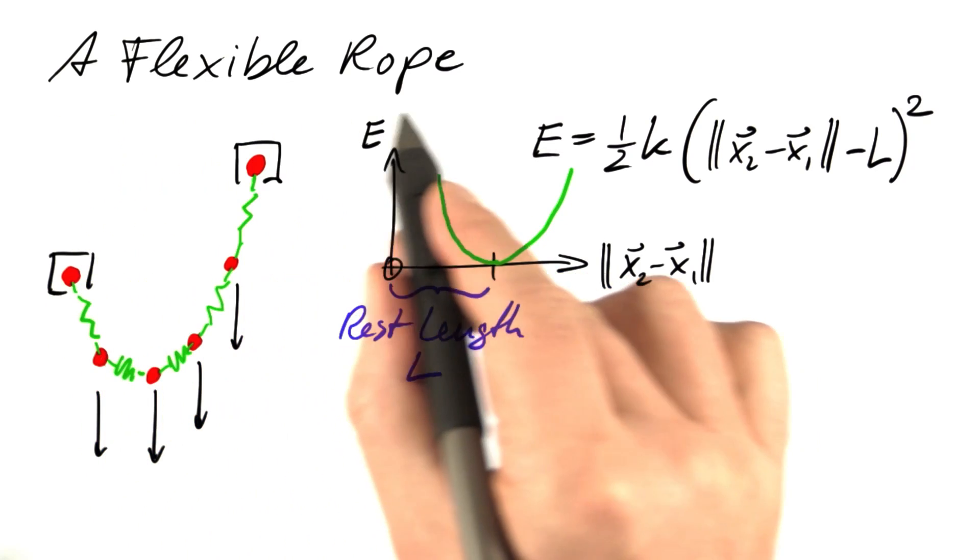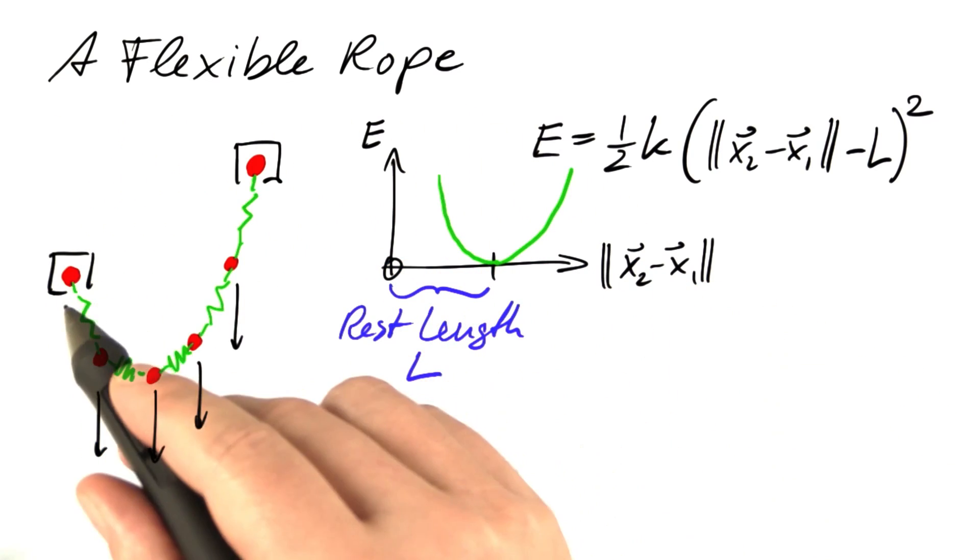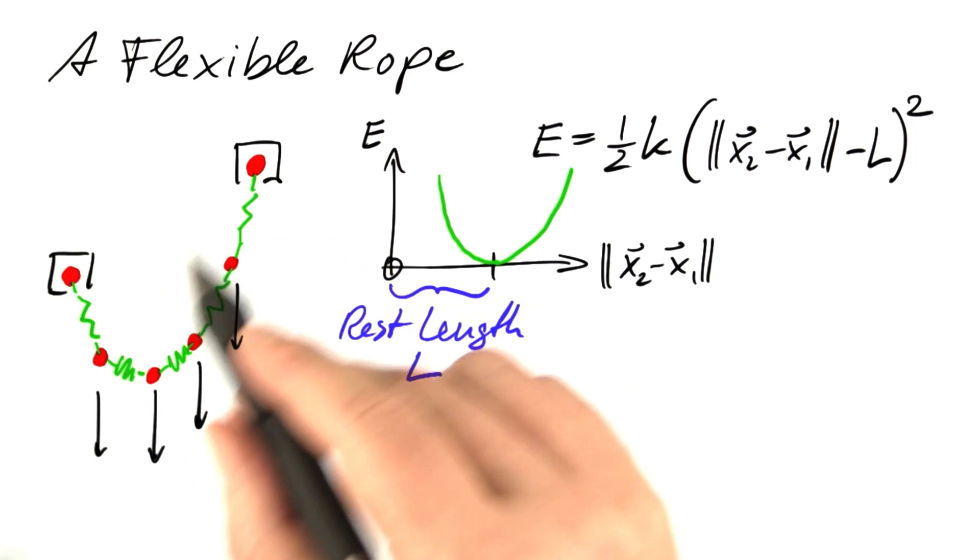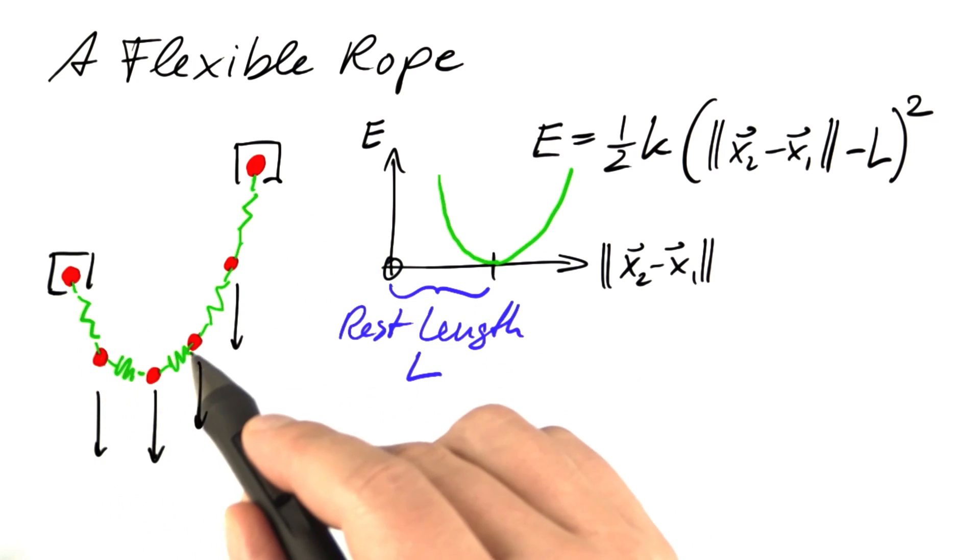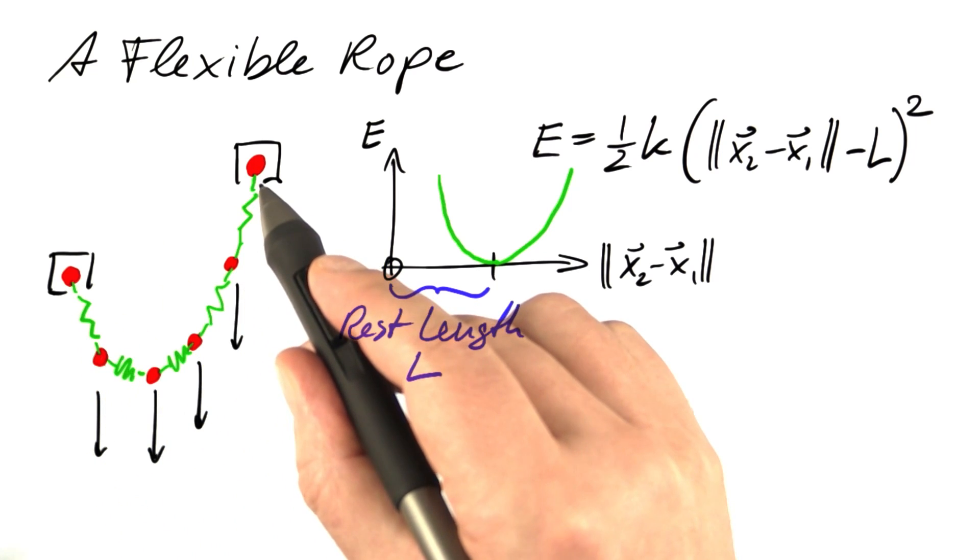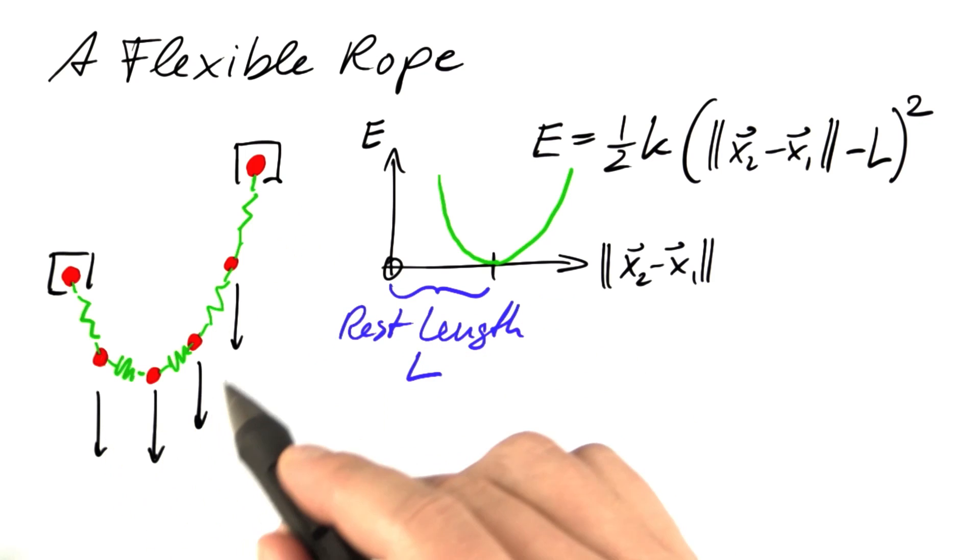Now let's try out some of these ideas with a flexible rope. We fix both ends of that rope and want to see what the equilibrium shape of that rope is going to be under the influence of gravity.